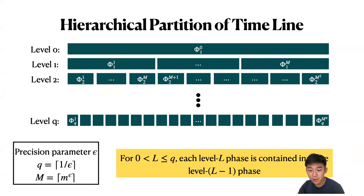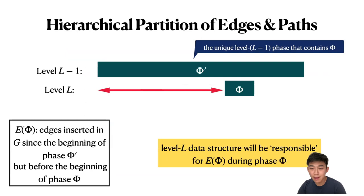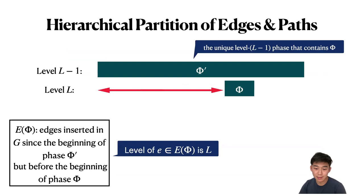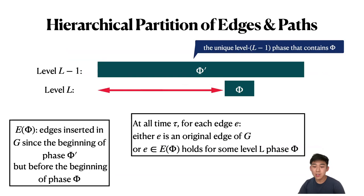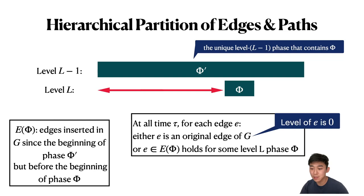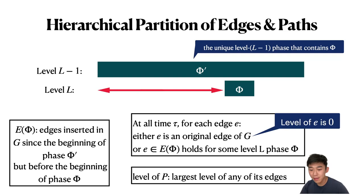For example, at level 0 there is a single phase containing all edge insertions, and at level q there are m^q phases each containing one edge insertion. Each level-L phase is contained in some level-(L-1) phase. Let phi be a level-L phase and phi-prime the unique level-(L-1) phase containing it. We define E(phi) as the set of edges inserted into G since the beginning of phase phi-prime but before the beginning of phase phi, and say our level-L data structure is responsible for these edges. The level of any edge in E(phi) is L; original edges have level 0. We define the level of a path as the largest level among its edges.